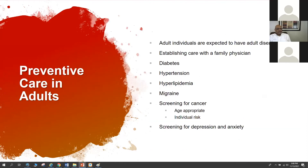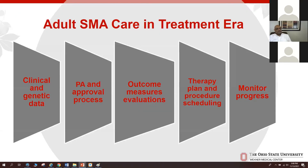It is always important for adults with SMA to have established care with a family physician for preventive care, including regular health screenings for diabetes, hypertension, and other medical conditions like migraine, depression, anxiety, and age-appropriate cancer screening.